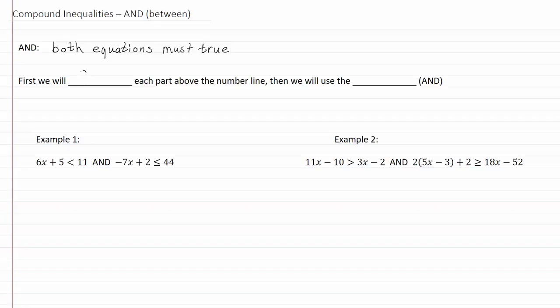First we're going to float our answers, each part above the number line, and then we're going to use the overlap, or in other words the intersection. We're only going to have intersections with an AND.